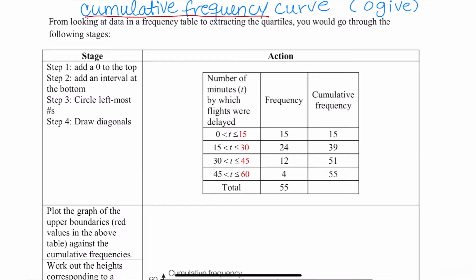Step number one is that you're going to add a zero to the top of the cumulative frequency column. So you're going to add a zero to the top. Step two is that you're going to add an interval at the bottom. And I have put the steps for you here on the left-hand side. So step one, zero to the top. Step two, you add an interval to the bottom.